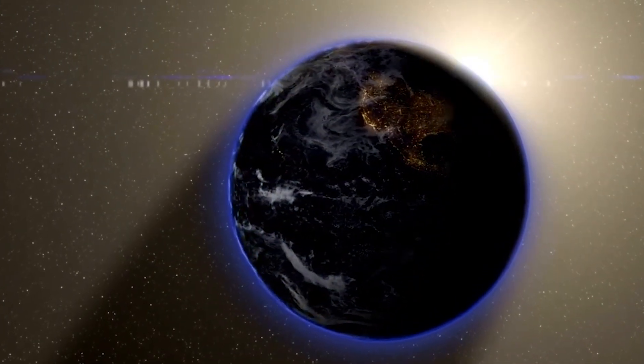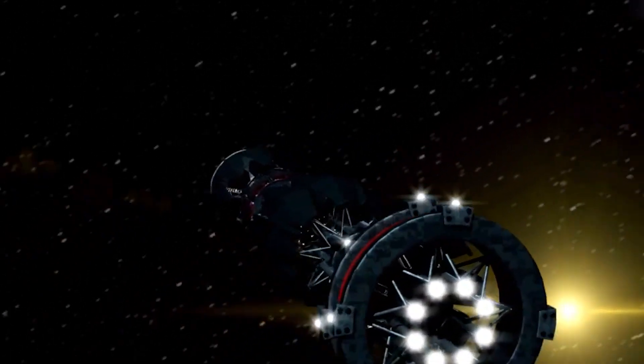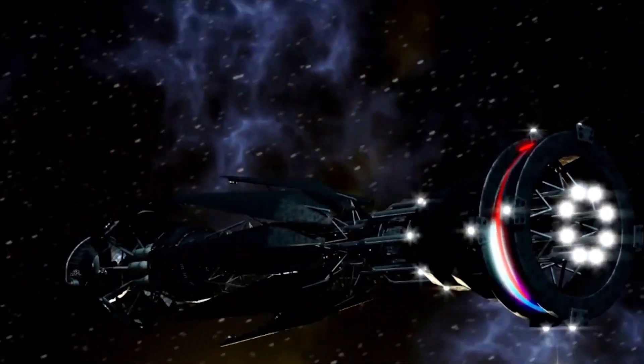When the core begins producing iron, fusion can no longer generate energy to counter gravity's relentless pull, leading to a catastrophic core collapse.